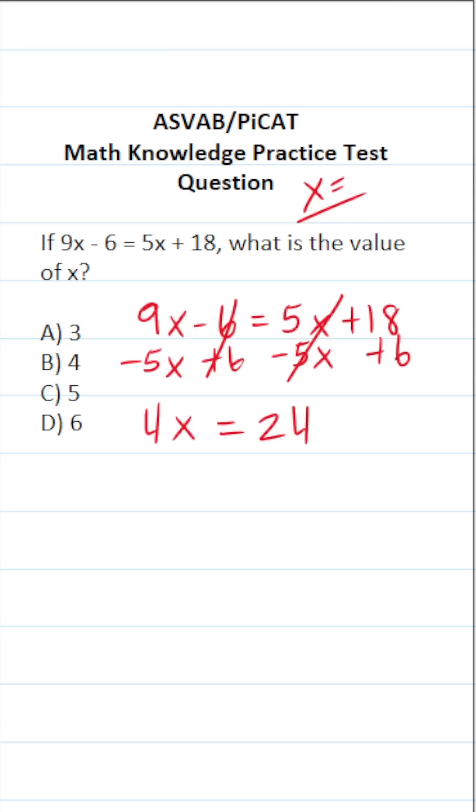Now we have a one-step equation where the only thing we have to do to solve it is divide both sides by 4. This says x equals 24 divided by 4, which is 6. So the answer to this one is D.